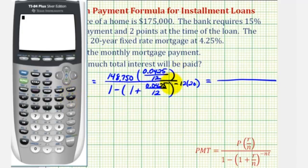So for the numerator, we'll have 148,750 times 0.0425 divided by 12. We'll go ahead and round this, it'll be approximately 526.8229.